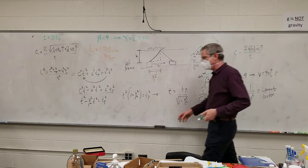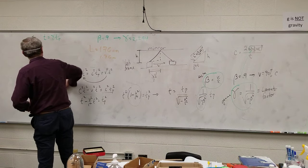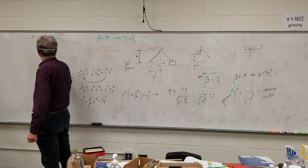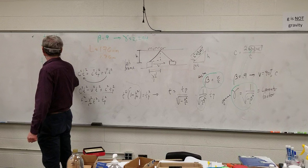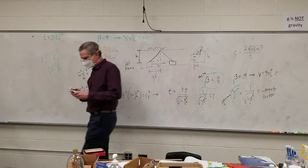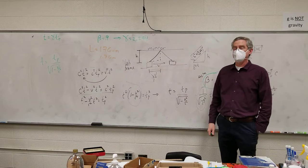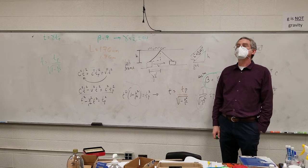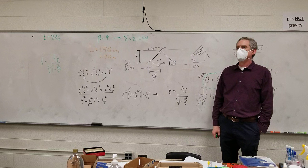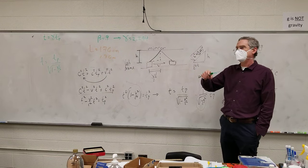So we have time put it back into the full form. Time is equal to the proper time over the square root of 1 minus v squared over c squared. If you travel the speed of light, what would time be?